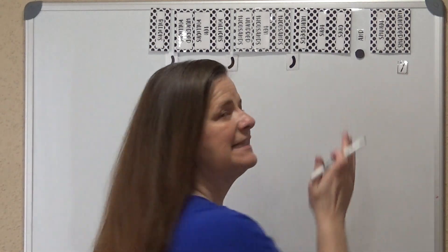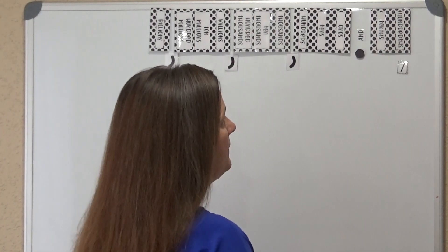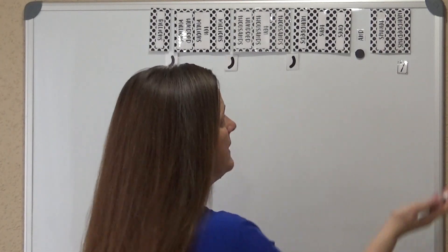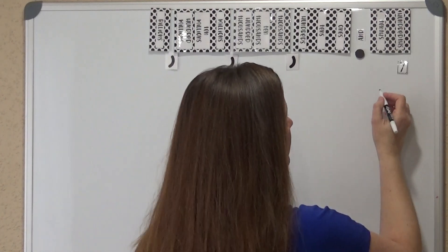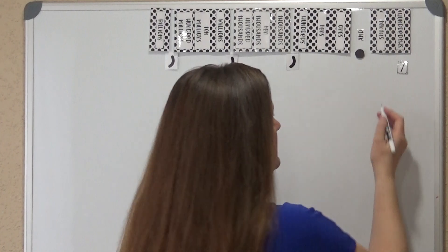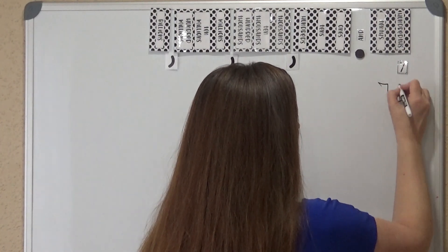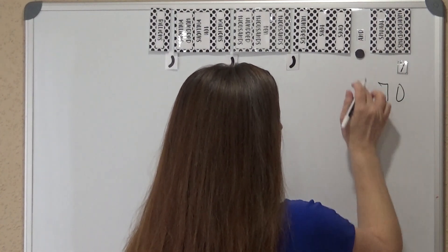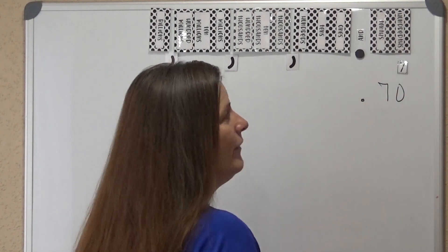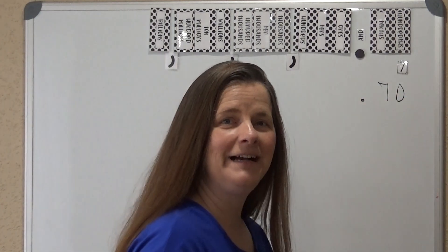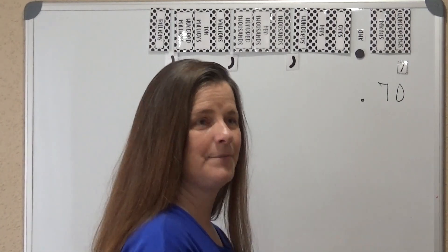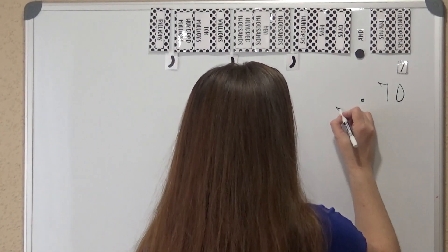If I have 7 pennies and I multiply 7 hundredths times 10, that's going to give me 70 cents. And this represents part of the whole, so I'm at 70 cents. Now if I multiply 7 dimes times 10, or 70 cents times 10, that's going to give me $7.